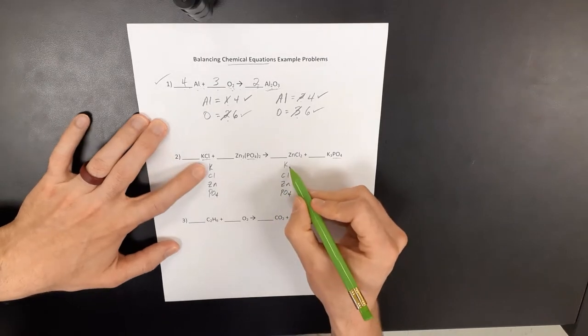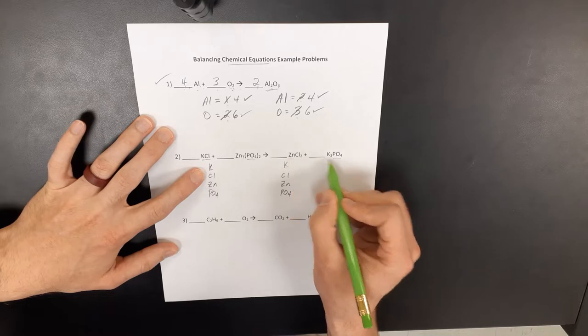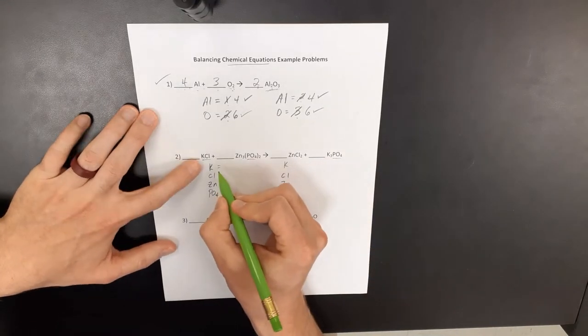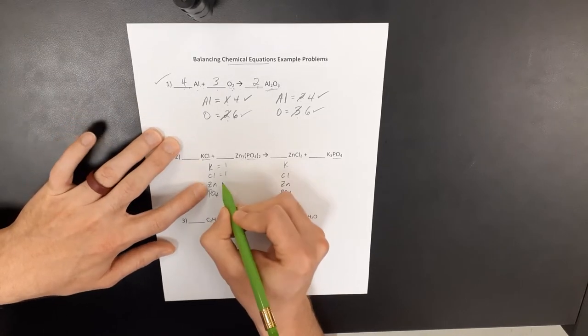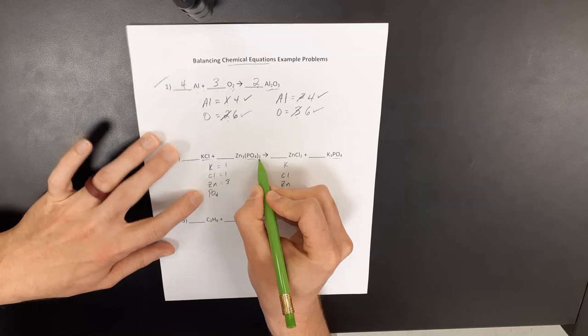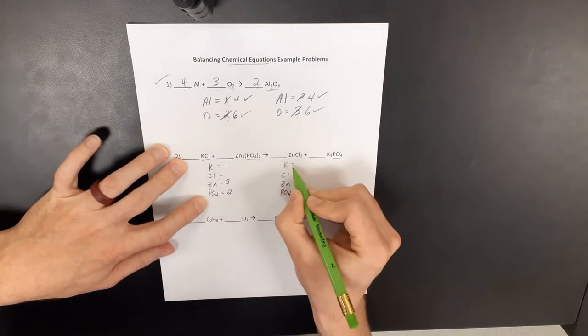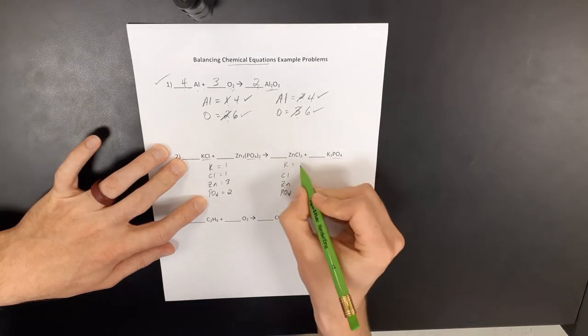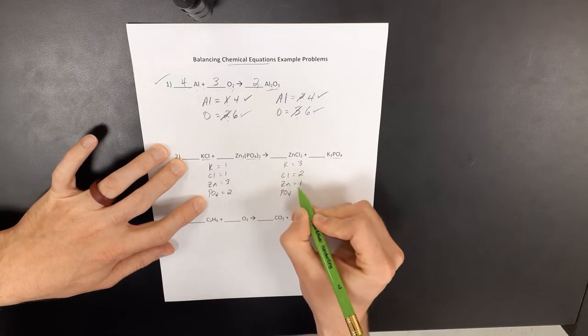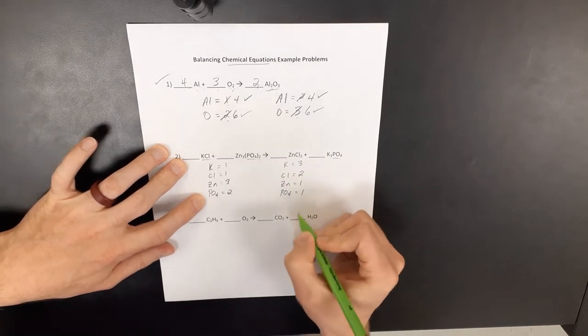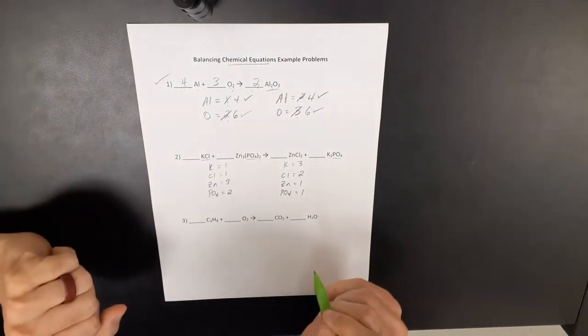So I don't need to separate it into the phosphorus and the oxygen. I can treat PO4 like it's one thing because it stays together on both sides of the equation here. And I like to make sure I put these things in the same order on both sides as well, not necessarily putting them in the order they are on this side. So in the beginning, I have one potassium, one chlorine, three zincs, and I have two of these phosphate ions. On the opposite side, I have three potassiums, two chlorines, one zinc, and one phosphate.